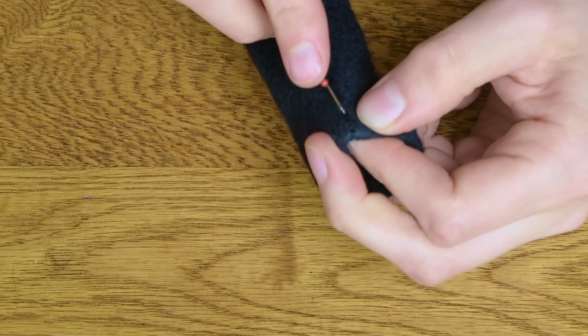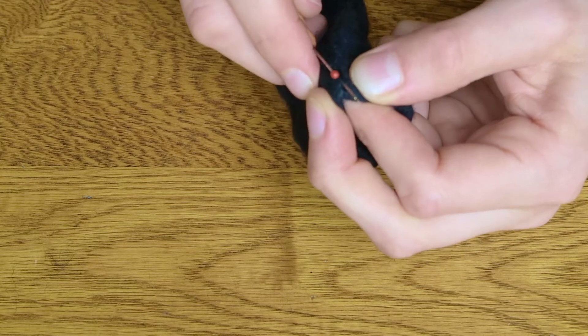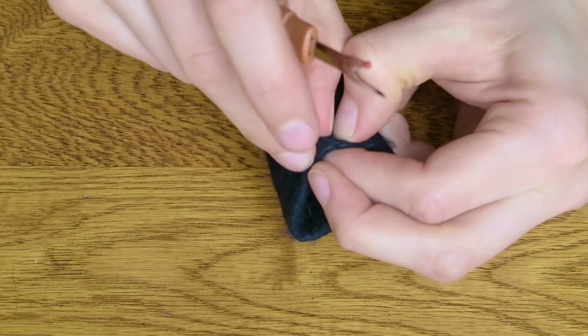Using a quick unpick, unpick a few side seam stitches at the top to create an opening for your drawstring. Do this to both sides.